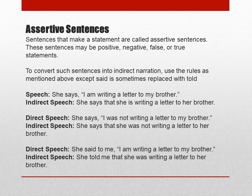Hello students. Today we are going to continue the remaining part of direct and indirect speech — that is different forms of sentences changed into indirect form: assertive sentence, exclamatory, interrogative, and optative sentences. Here we are going to study how these types of sentences are transformed from direct into indirect speech.